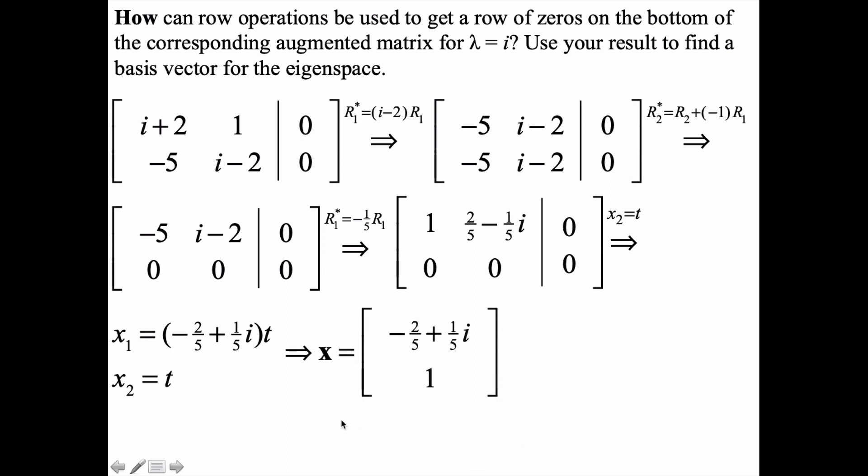If we factor that t out, we'll call x vector the first eigenvector family simply generated by multiplying this vector by some parameter t. The eigenspace corresponding to lambda equals i is one-dimensional and consists of all complex scalar multiples of this basis vector.